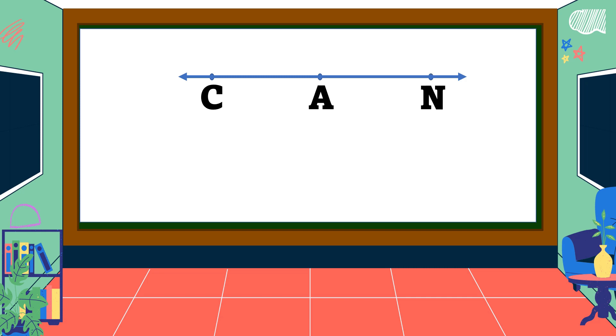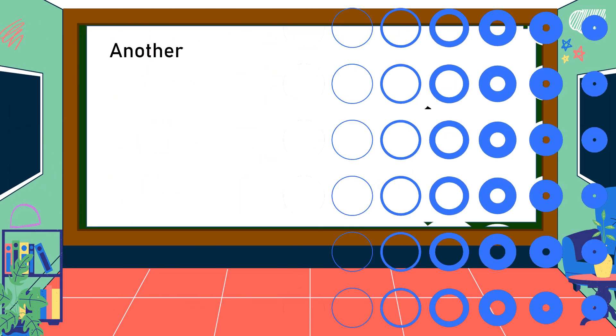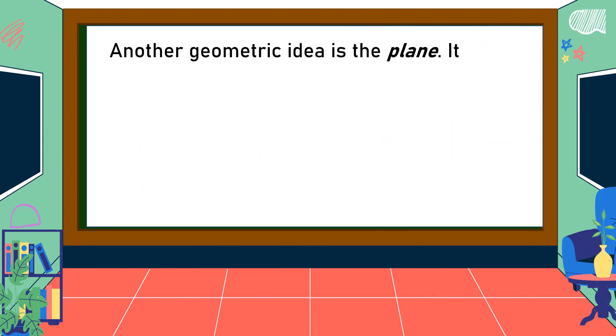If A is between C and N, then AC and AN are opposite rays.